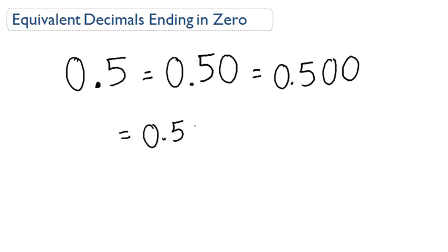We can keep adding zeros at the very end. This does not change the value. This number with all these zeros at the end is the same thing as 0.5.